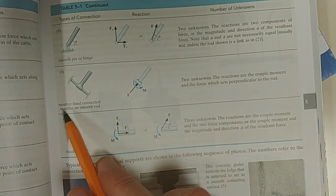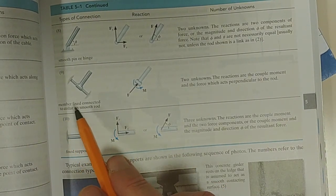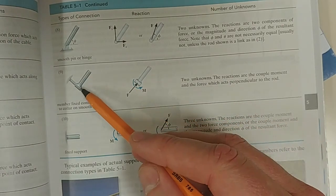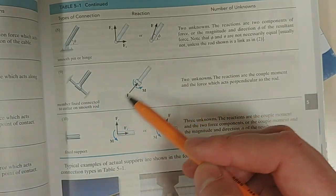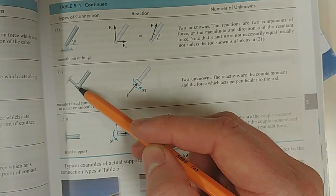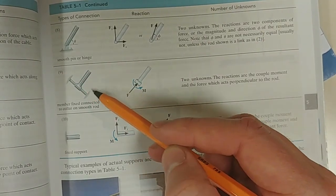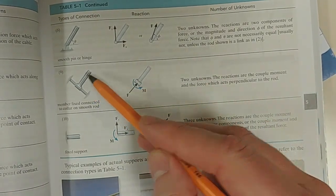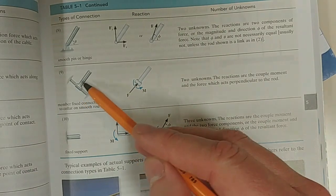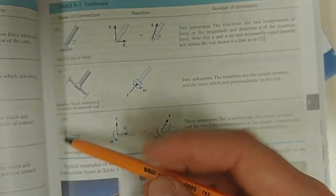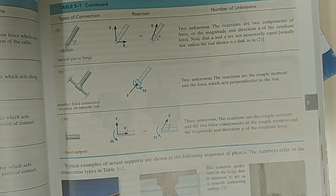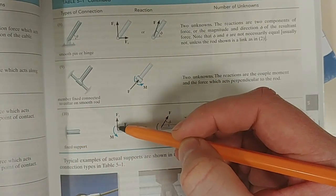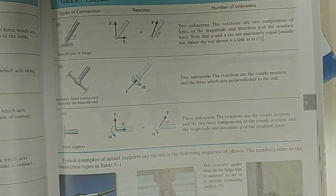And here is a member fixed connected to collar on smooth rod. The only way that this type of connection can resist forces is in that direction. Because if I apply a force in that direction, then this type of connection will resist me. But if I apply a force in that direction, it will just slide. So I can't put in a reaction force there. And if I try to apply a moment, then that type of connection will also apply a reaction moment. And then this is the fixed support. This is the most constrained, if you will. If I apply a force in the X, it will resist me. If I apply a force in the Y, it will react. It will resist me. And if I apply a moment, it will react.